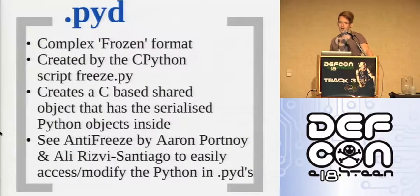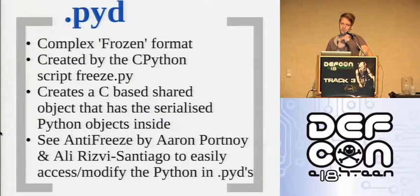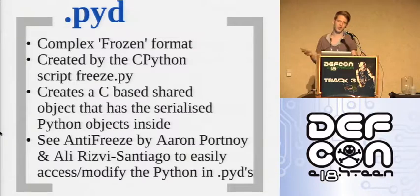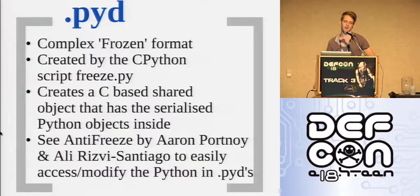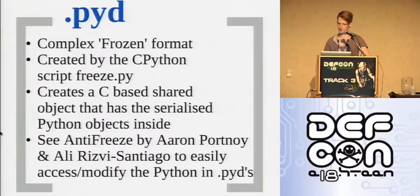The .pyd is the most complex format Python produces by itself, comes as standard with CPython, and compiles into a shared compiled C object. There's been good work done by Aaron Portnoy and Ali with a toolkit called antifreeze where you can unpack .pyds, modify the bytecode, and repack them — they did some good stuff with games on Windows, making characters jump much higher.